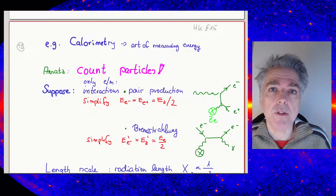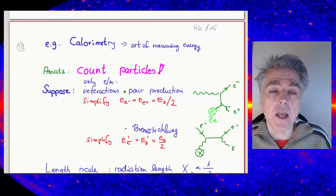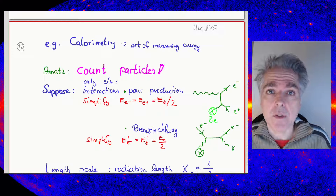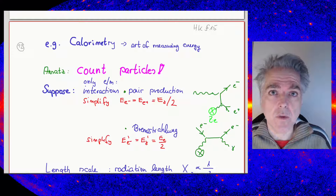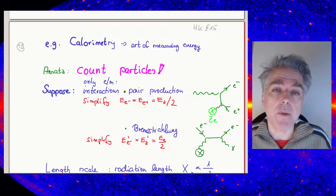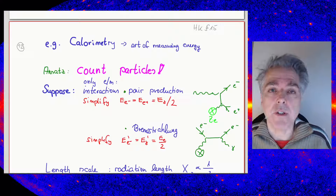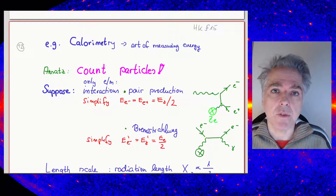For electrons and positrons, there are two competing energy loss mechanisms. One is ionization losses, which dominate at low energies. At high energies, above a so-called critical energy, energy is mainly lost through Bremsstrahlung — a process where the electron is deflected by the Coulomb field of the nucleus and radiates. In quantum field theory, this is the emission of single or multiple photons.